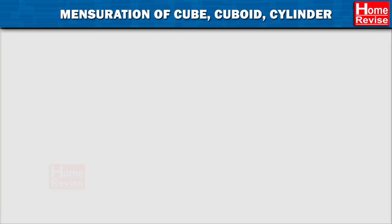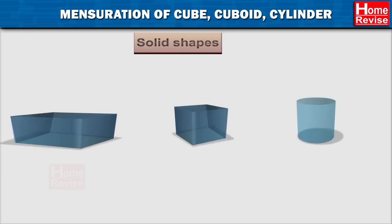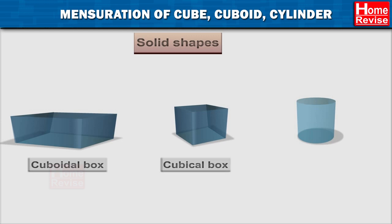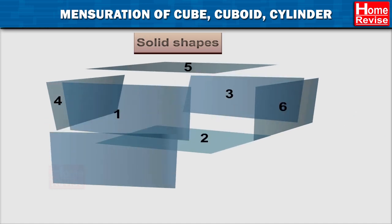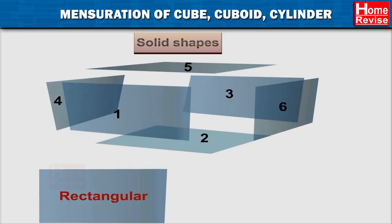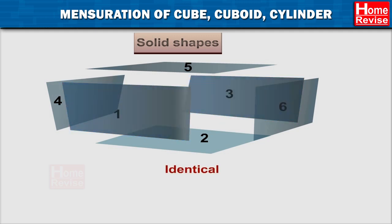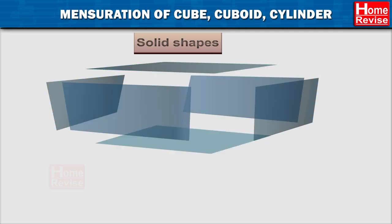Mensuration of Cube, Cuboid, and Cylinder — Solid Shapes. Look at the figures given below. In a cuboidal box, all six faces are rectangular and opposite faces are identical. So there are three pairs of identical faces.